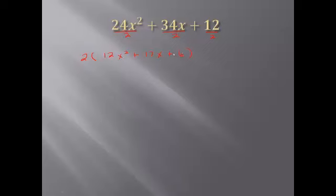That helped somewhat — it made the numbers smaller — but I still have this trinomial to factor. There's a twelve in front of x squared, so I can't use the simple method from the last problem. I'll use what I call the AC method, also known as factoring by parts or factoring by grouping. The first step is to multiply the first coefficient by the last number: 12 times 6 equals 72. Then we find factor pairs of 72 that give a sum of 17.